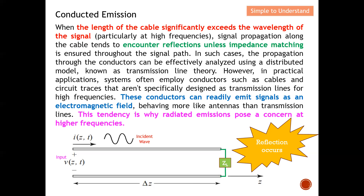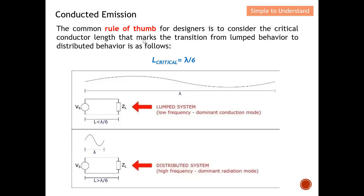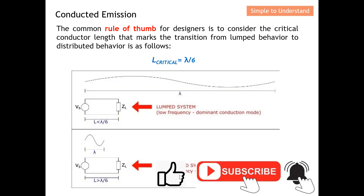In short, conducted emission mainly occurs at low frequency while radiated emission occurs at higher frequency. As a designer, the critical conductor lengths that mark the transition from lumped behavior to distributed behavior are as follows: for a lumped system, ensure the length is much shorter than wavelength divided by six; for a distributed system, the length must be much larger than wavelength divided by six. This is the common rule of thumb for considering critical conductor length.